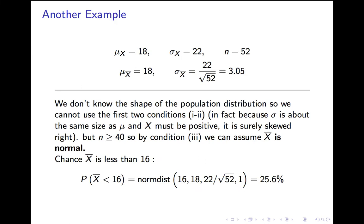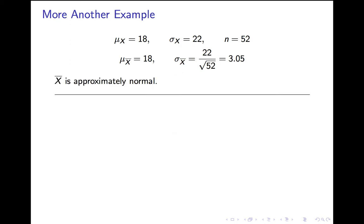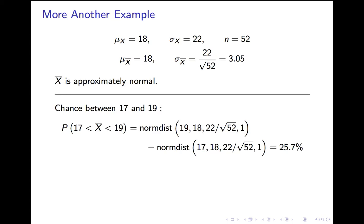Now we can calculate probabilities with normdist, because we know it's normal. Probability that x-bar is less than 16, normdist of 16. You put in the mean, you put in the standard error, you put in 1, and that works out to 25.6%. The probability of being between 17 and 19 is normdist of 19 minus normdist of 17. All the other stuff is the same, and that is 25.7%.